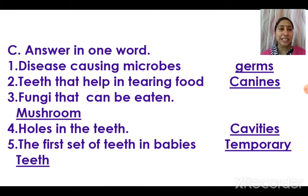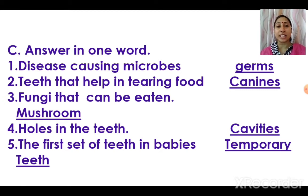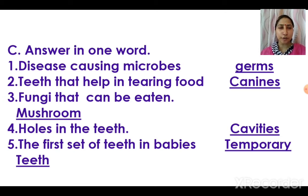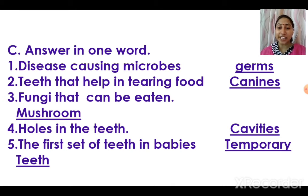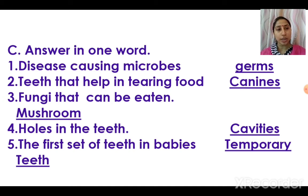Fungi that can be eaten: mushroom is an example of a fungus that can be eaten — mushroom soup, mushroom vegetable. Holes in the teeth are called cavities — toffee and chocolate can lead to holes in the teeth. The first set of teeth in babies are called temporary teeth or milk teeth — both answers are correct.